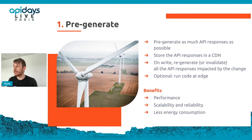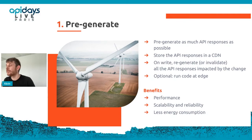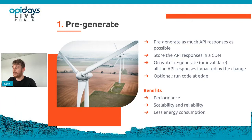When a user requests an API resource, it will already be in cache and served instantly. For some very dynamic resources that cannot be stored in cache, you leverage a distributed architecture and run the code at edge using something like Fly.io, Vercel, or Cloudflare Workers. The benefits are performance, scalability, reliability, and less energy consumption.